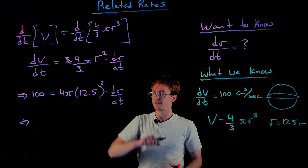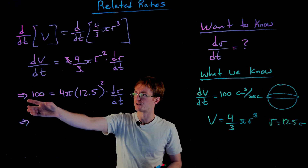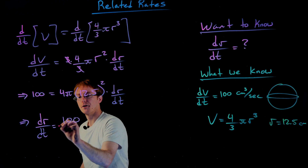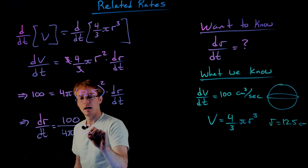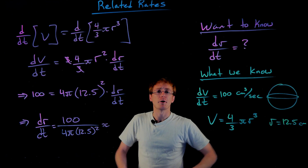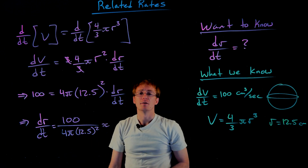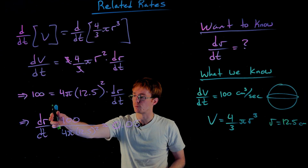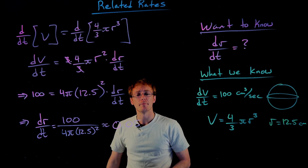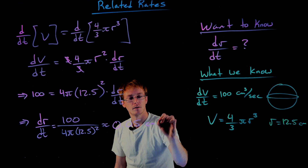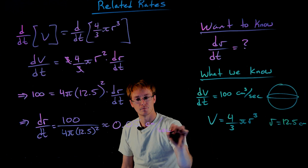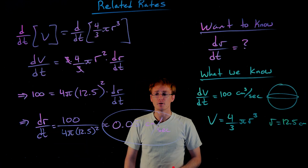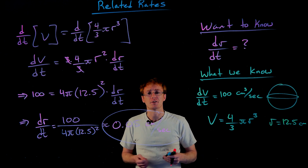To finish, we isolate dr/dt by dividing both sides by 4π times 12.5 squared. So dr/dt equals 100 divided by (4π · 12.5²). Using a calculator to approximate that, we get about 0.05. The units for this rate are units of radius per units of time: centimeters per second. So at this particular moment in time, the radius of our spherical balloon is growing at a rate of about 0.05 centimeters per second.